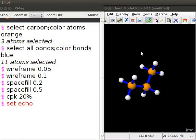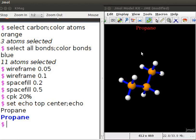So, type set echo top center semicolon echo propane. Press Enter. We can see the text propane displayed at the top center of the panel.